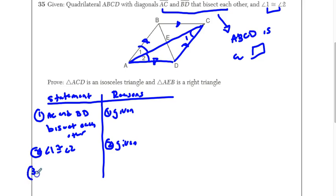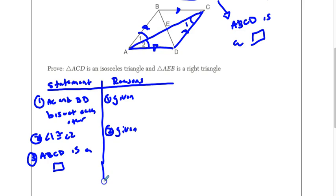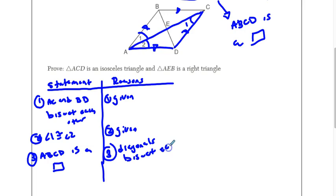Remember, my third step was to state this: ABCD is a parallelogram. How did I know that? The reason I knew that statement — that it was a parallelogram — was because of this first given, that diagonals bisect each other in a parallelogram. So that proves that it's a parallelogram because it has a parallelogram property.